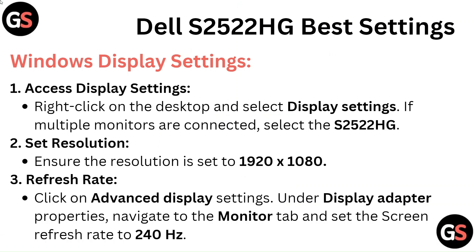Windows Display Settings: Right-click on the desktop and select Display Settings. If multiple monitors are connected, select the S2522HG. Ensure the resolution is set to 1920 x 1080. Click on Advanced Display Settings, and under Display Adapter Properties, navigate to the Monitor tab and set the screen refresh rate to 240Hz.